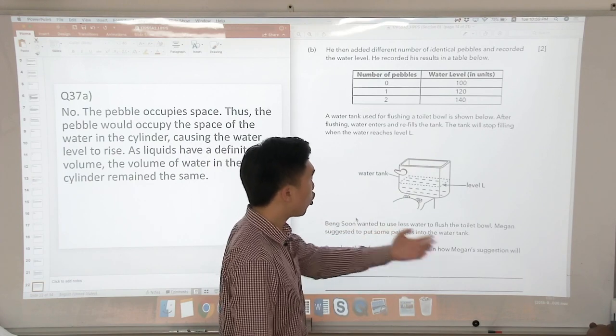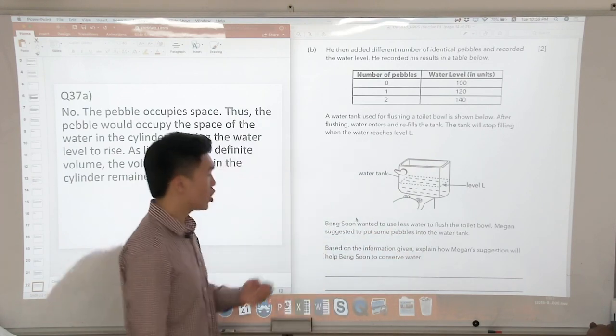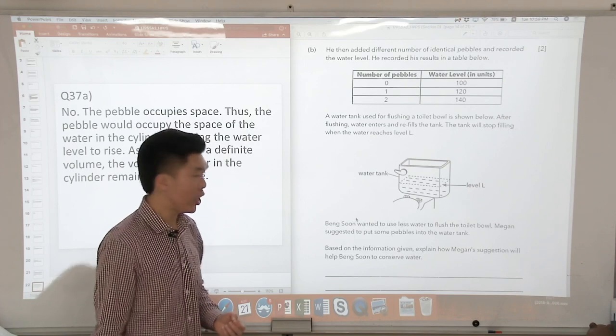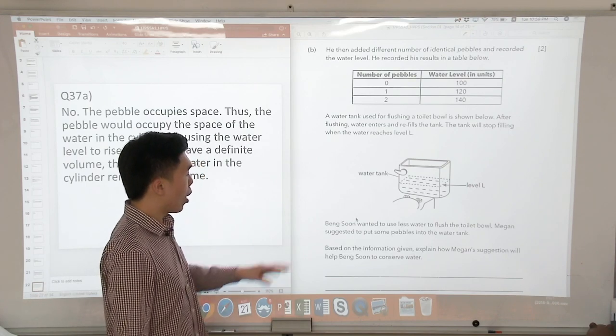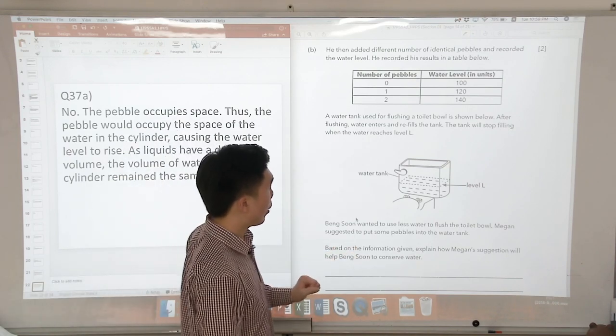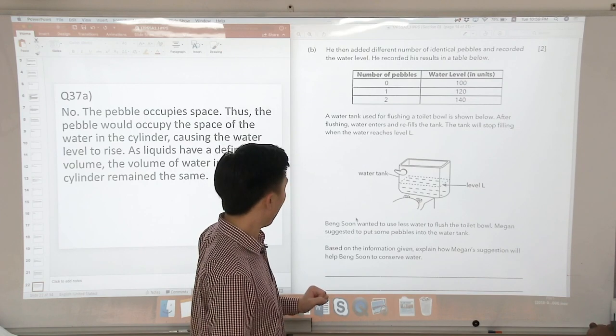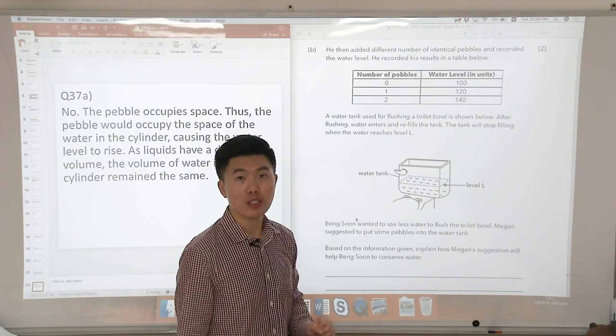So Bing Sun wanted to use less water to flush the toilet bowl. Megan suggested to put some pebbles into the water tank. Based on the information given, explain how Megan's suggestion will help Bing Sun to conserve water.